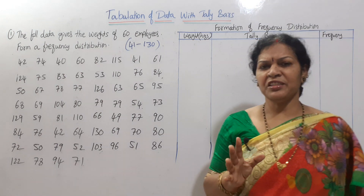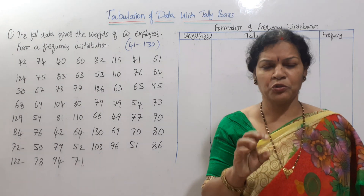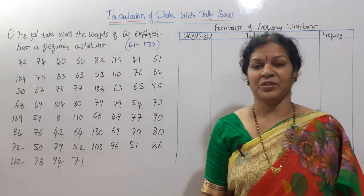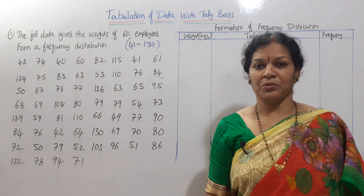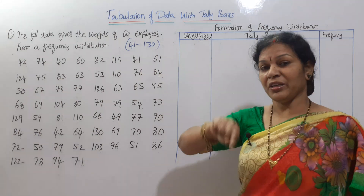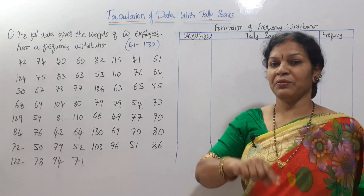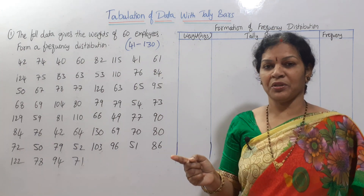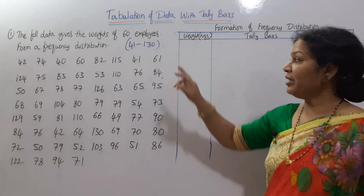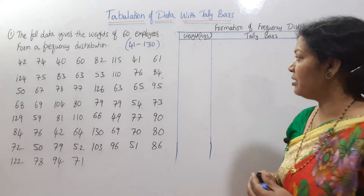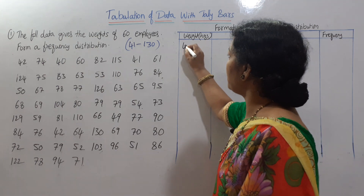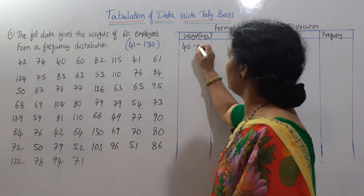In class intervals, we can take widths of 5, 10, or 20. I will give you intervals of width 10 — starting from 40 to 50, then 50 to 60.